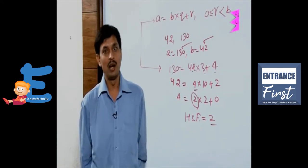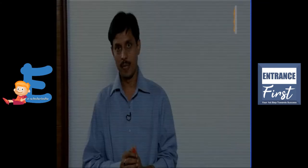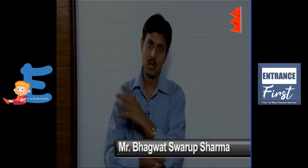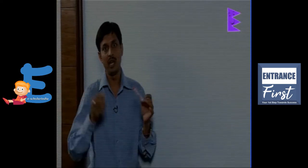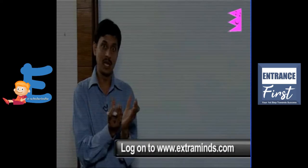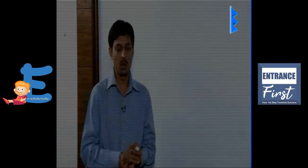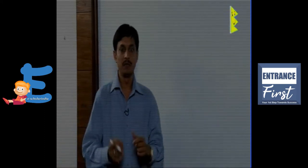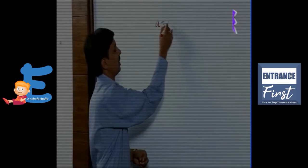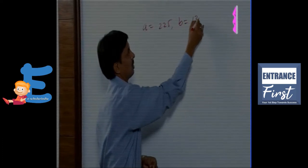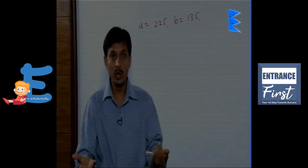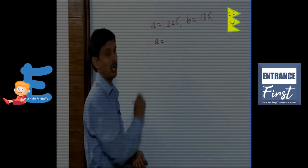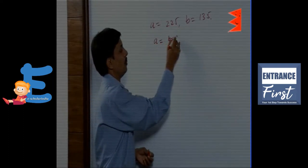Now we will begin with another example. Suppose the question is: find the HCF of 225 and 135 using Euclid's Division Lemma. These are two separate positive integers. We always select the greater number as A and the smaller one as B. So A equals 225 and B equals 135, and we apply A equals B into Q plus R.